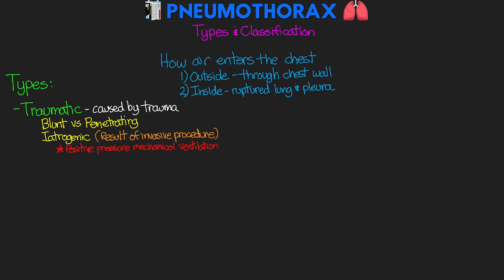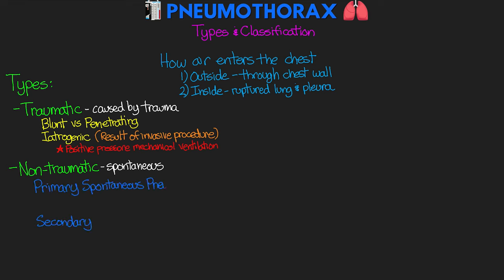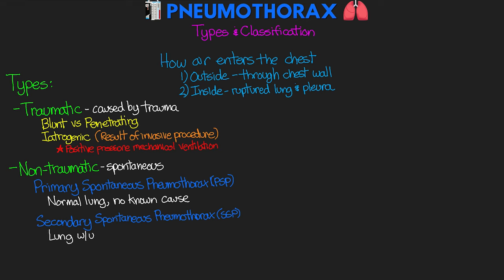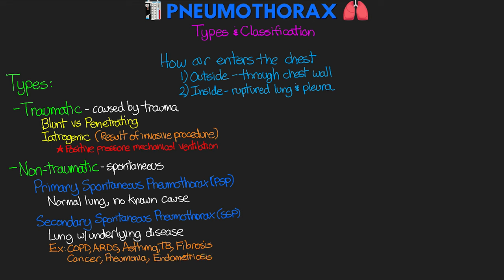After our traumatic pneumothoraces, we also have our non-traumatic pneumothoraces — essentially our spontaneous ones. We have two types: primary and secondary. For our primary spontaneous pneumothorax, or PSP, this can result from normal lung tissue really without any known cause. For our secondary spontaneous pneumothorax, or SSP, this results from lung tissue that has some underlying disease — things like COPD, ARDS, asthma, TB, fibrosis, cancer, pneumonia, and even endometriosis, just to name a few.